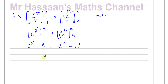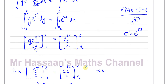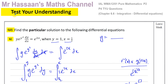The −e terms cancel from both sides, leaving e^(y²) = e^(2x). Since both sides have the same base, the powers must be equal, so y² = 2x. We can also confirm this by taking the natural log of both sides. If we want to express y explicitly, we get y = √(2x). That's the answer to question 2, part b, from the 'test your understanding' section of chapter 6.6.